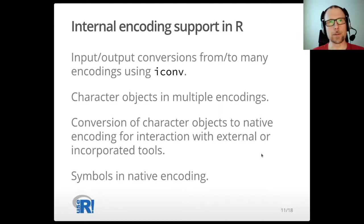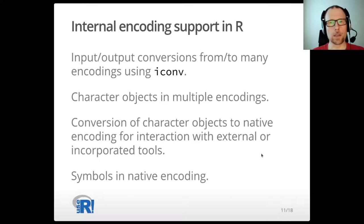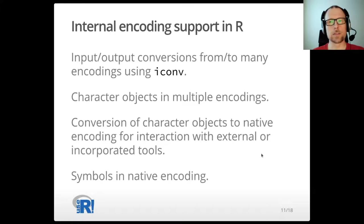Except when they don't — and I will speak about that later. The internal encoding support in R supports multiple encodings on input and output. Very many encodings are supported via the iconv library. Character objects support the encodings I have described. Importantly, sometimes R needs to convert strings to the native encoding. This is necessary when passing strings to external libraries, or to code from external projects incorporated into R. Sometimes it is also necessary to pass strings to R subsystems designed to work with byte arrays. Symbols in R are in the native encoding, for instance.